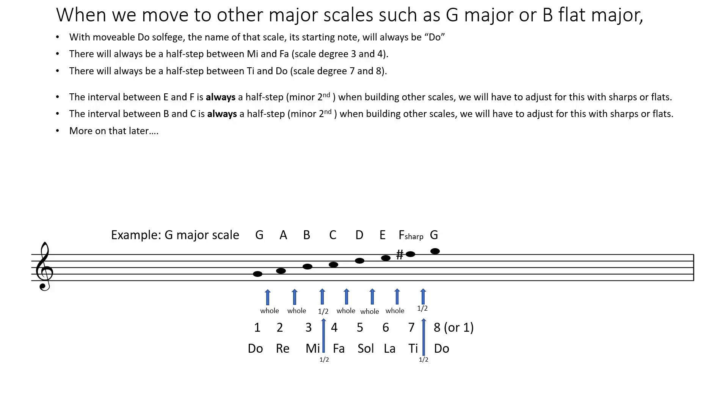There will always, in a major scale, there will always be a half step between Mi and Fa, scale degree 3 and 4. There will always be a half step between Ti and Do, scale degree 7 and 8.